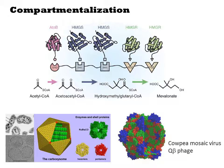Beyond compartments defined by lipid bilayers, proteinaceous shells and aggregates of proteins similarly create local concentration effects and barriers to free diffusion of molecules in the cell. Compartmentalization strategies based on fusions to protein scaffolds, RNA scaffolds, and DNA scaffolds are being investigated as strategies to more efficiently direct flux through a biosynthetic pathway. Additional strategies include protein shells such as the carboxysome or virus particles.